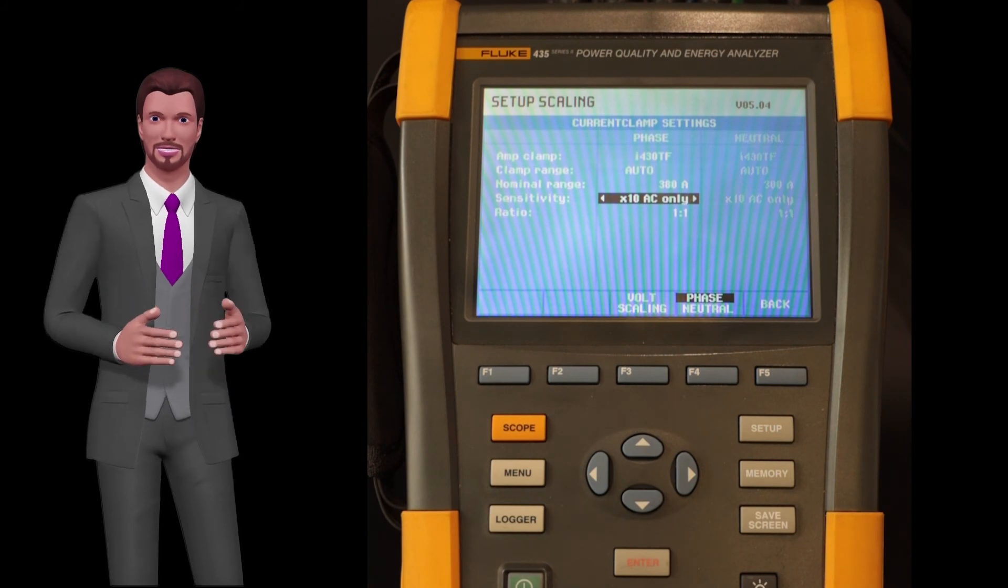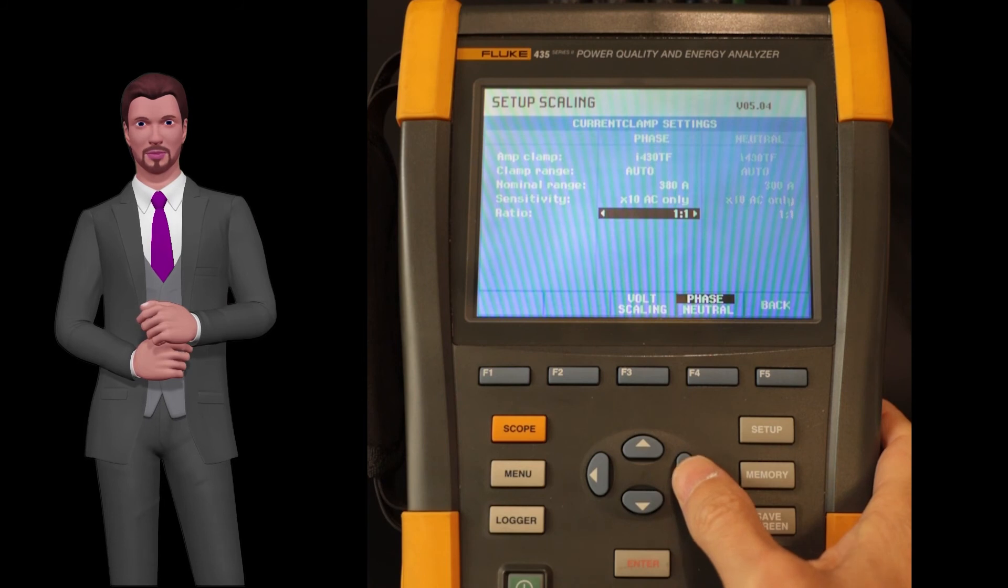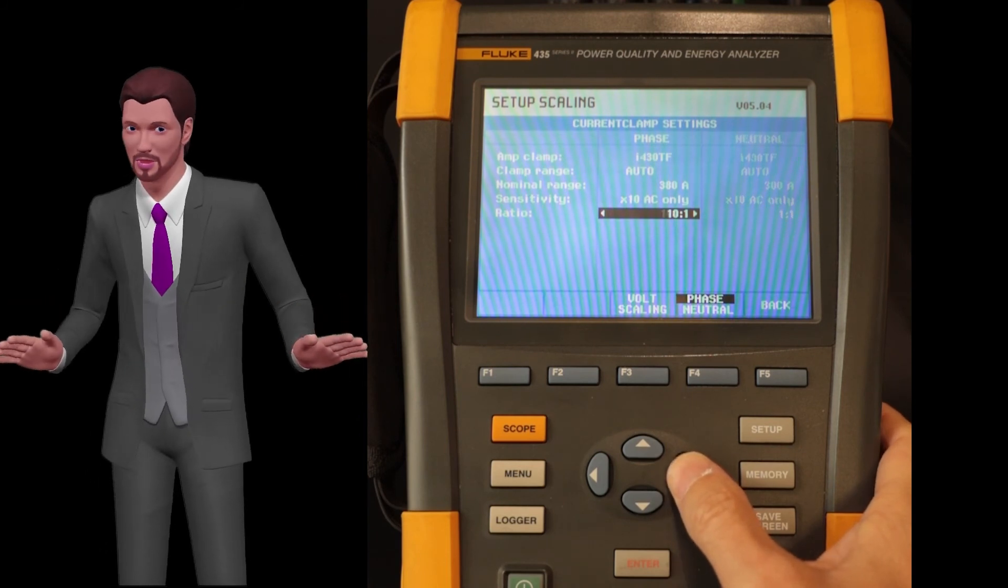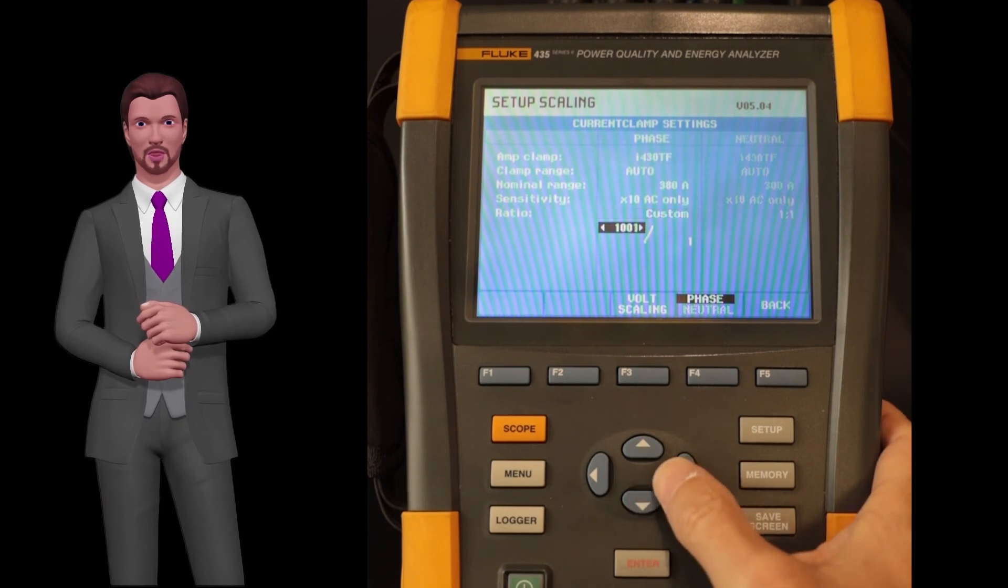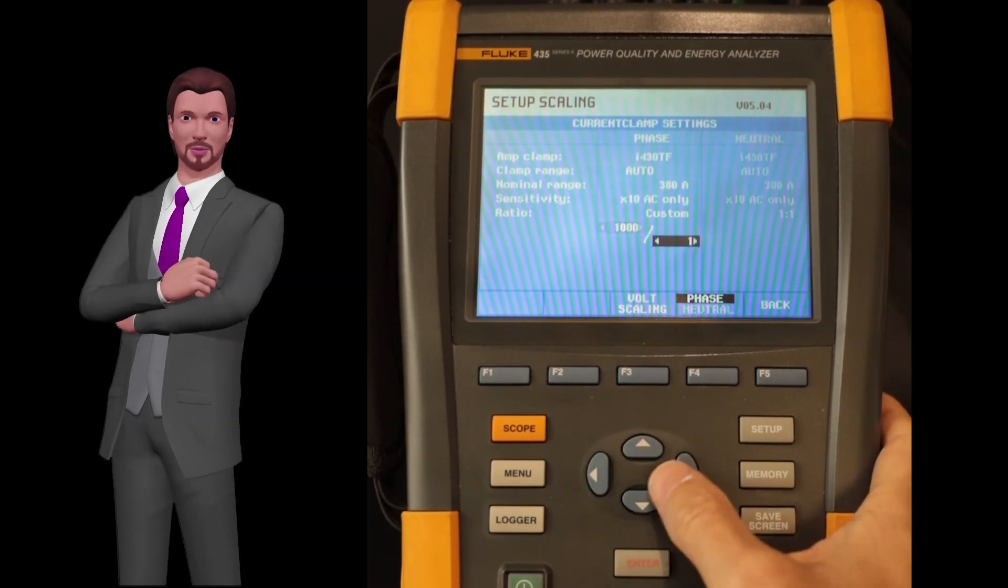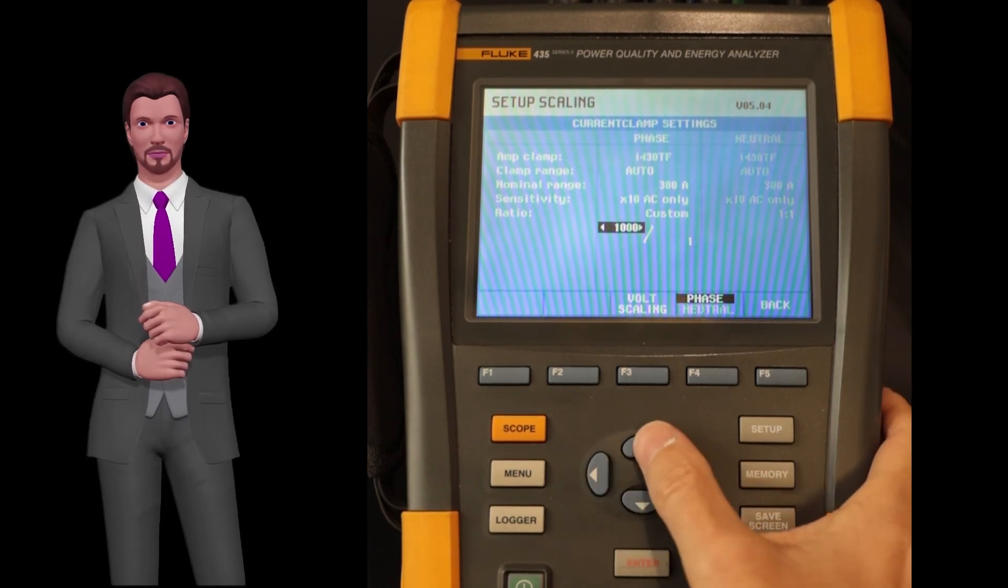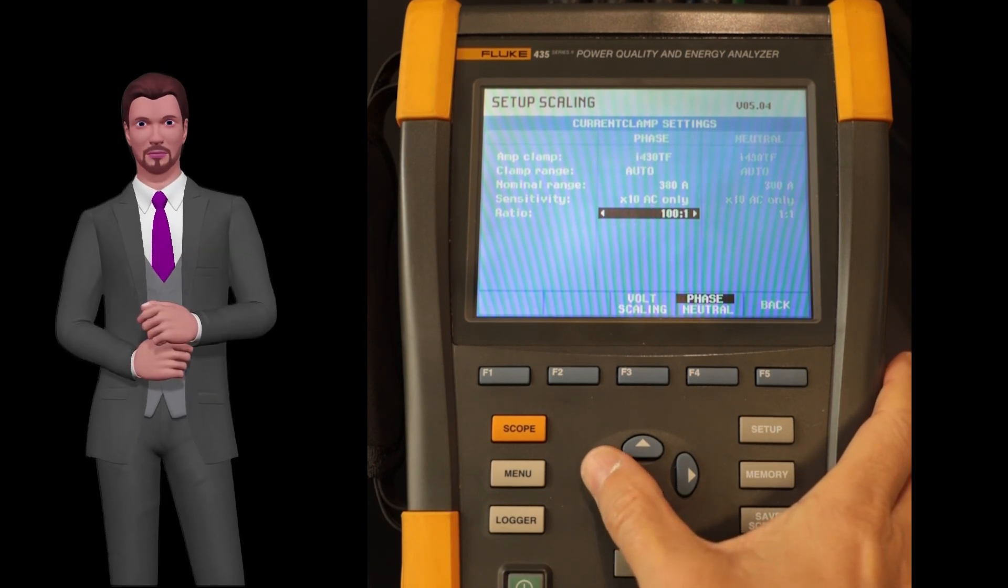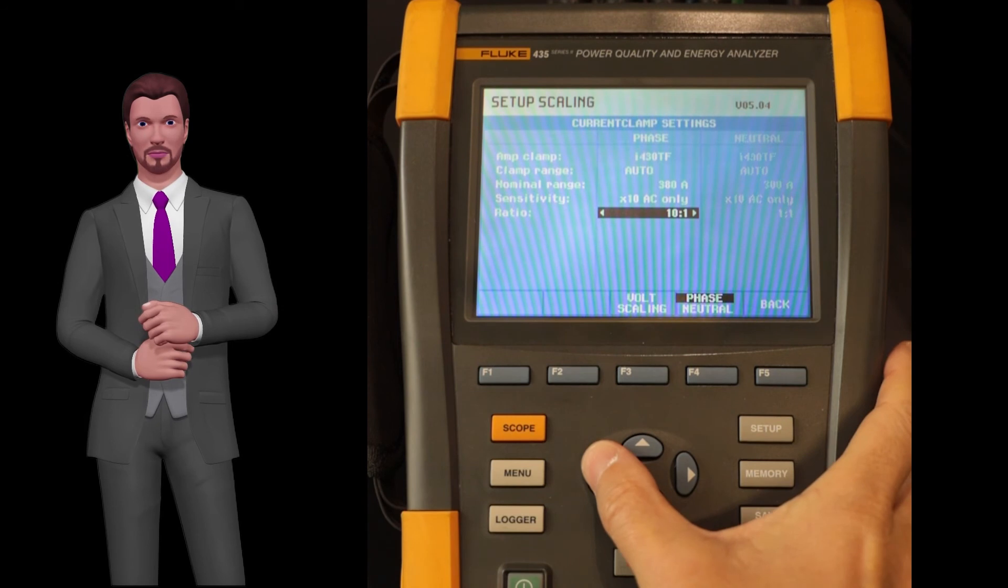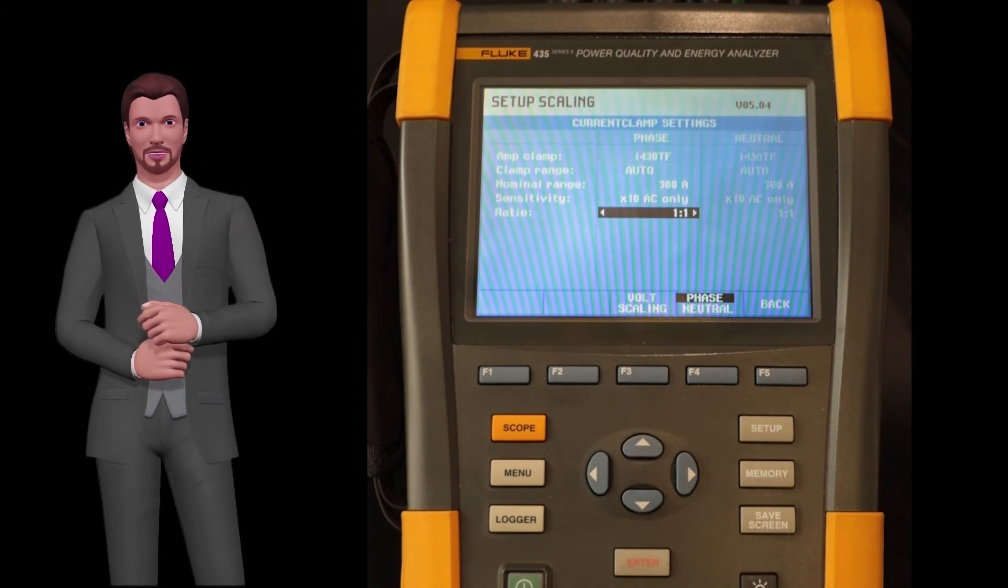Finally, with the down arrow key we select the ratio option. Once this option is selected, with the right and left arrows we can move through several options, in order to select the transformation ratio in the case that current measurement transformers are used in medium and high voltage systems, as normally happens for example in electrical substations. In this way, the unit will apply this transformation ratio to measured low voltage current at the output of the current measurement transformer, in order to calculate and display medium and high voltage current values.